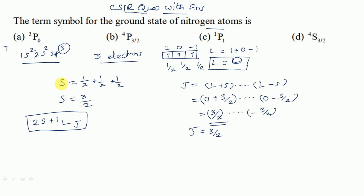So we can substitute all the values in the formula. 2 into S, 3/2, S value 3/2 plus 1. L value 0. 0 in the sense what? So capital L, 0 means what?